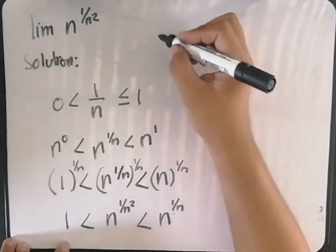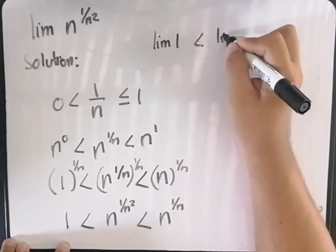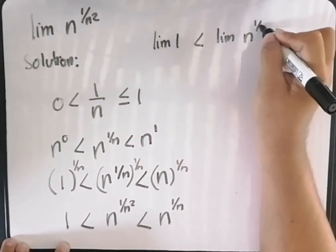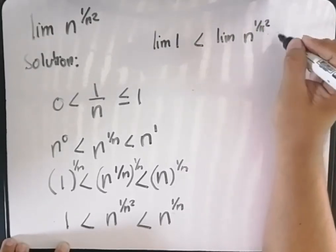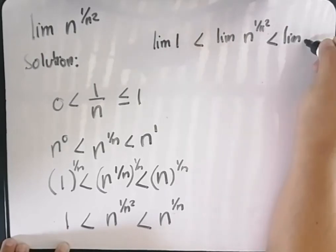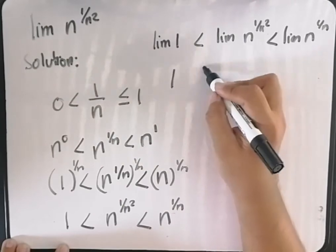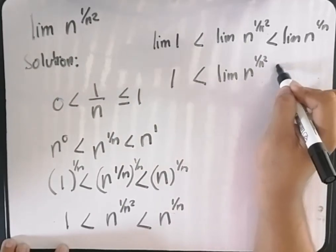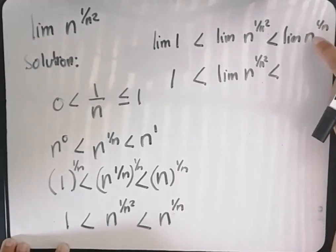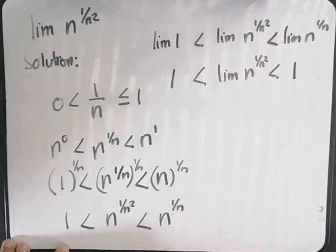And now if we find the limit of this, we have the limit of 1, the limit of n raised to 1 over n squared, the limit of n raised to 1 over n. We know that the limit of 1 is just equal to 1, and the limit of n raised to 1 over n is also equal to 1.